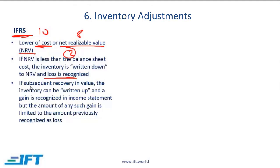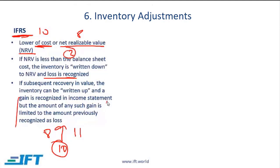If there is a recovery in value afterwards — from $8 the net realizable value goes up to $11 — under IFRS you are allowed to write back up, but only to the original value of $10. These are the rules under IFRS.